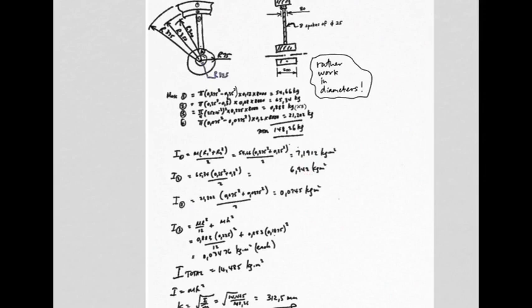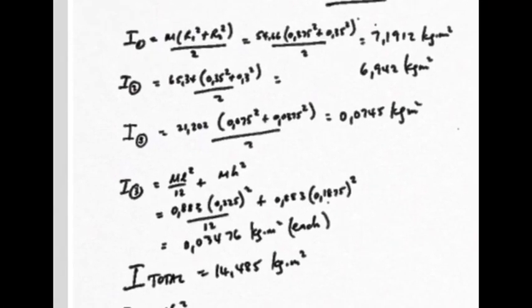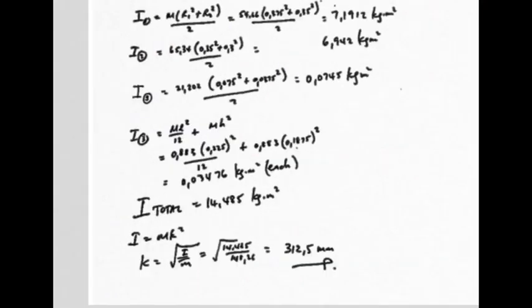Check your answers: piece one, piece two, piece three — the spoke — converted using the parallel axis theorem to the center of rotation. Each spoke contributes 0.03476 kg·m², multiplied by eight for all spokes. The total mass moment of inertia is 14.485 kg·m². Using I = mk², the radius of gyration k = 312.5 mm — the imaginary spot where all the flywheel mass could be considered to act to achieve the same I value.